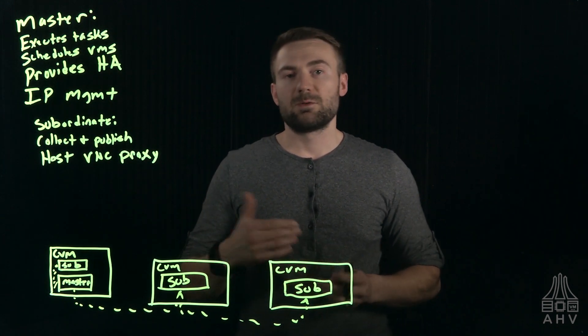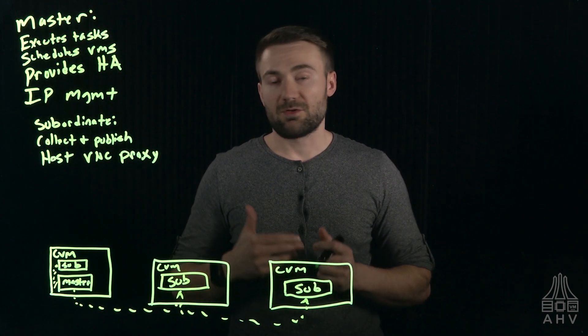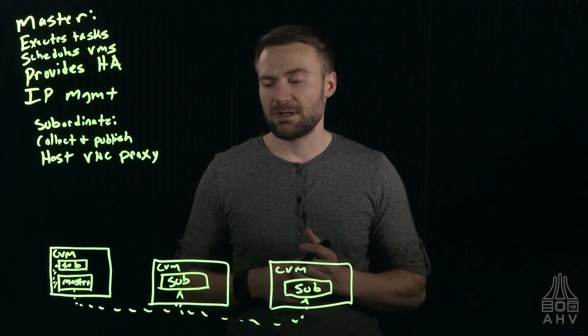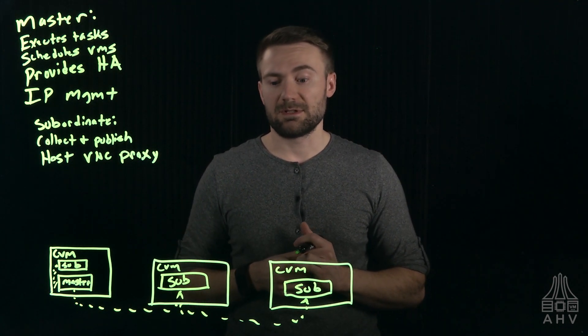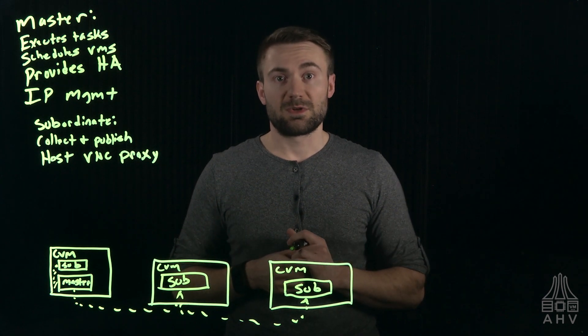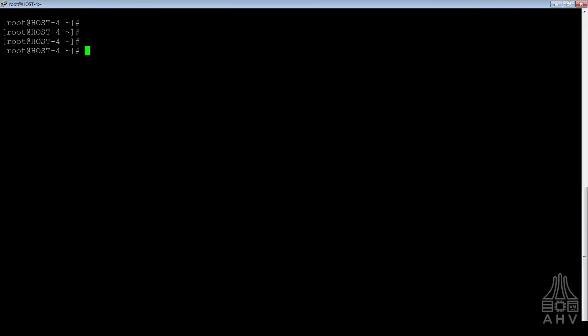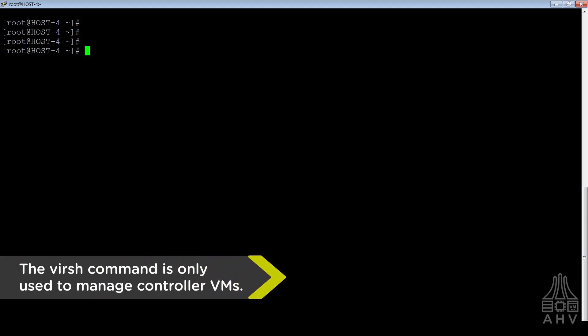Alright so now that we've discussed a little bit about the Acropolis management services and also what the difference between those and the Acropolis hypervisor is, I'd like to discuss some commands that you can use. So right now we're logged in to the host, the Acropolis hypervisor, and we can use the VERSH command to list and manage different aspects of your controller VM.